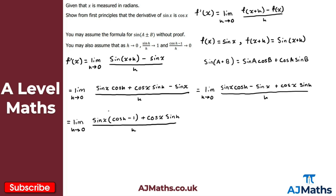Now I'm going to apply linearity — when taking the limit of a sum, I can write it as the sum of two individual limits. So this becomes: the limit as h tends to zero of sin x times (cos h minus one) over h, plus the limit as h tends to zero of cos x sin h over h.